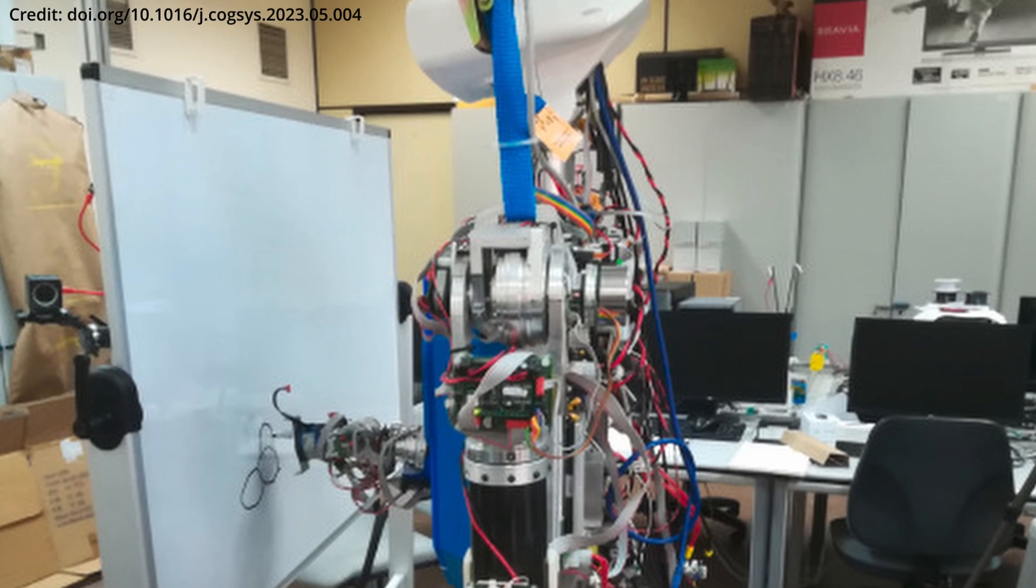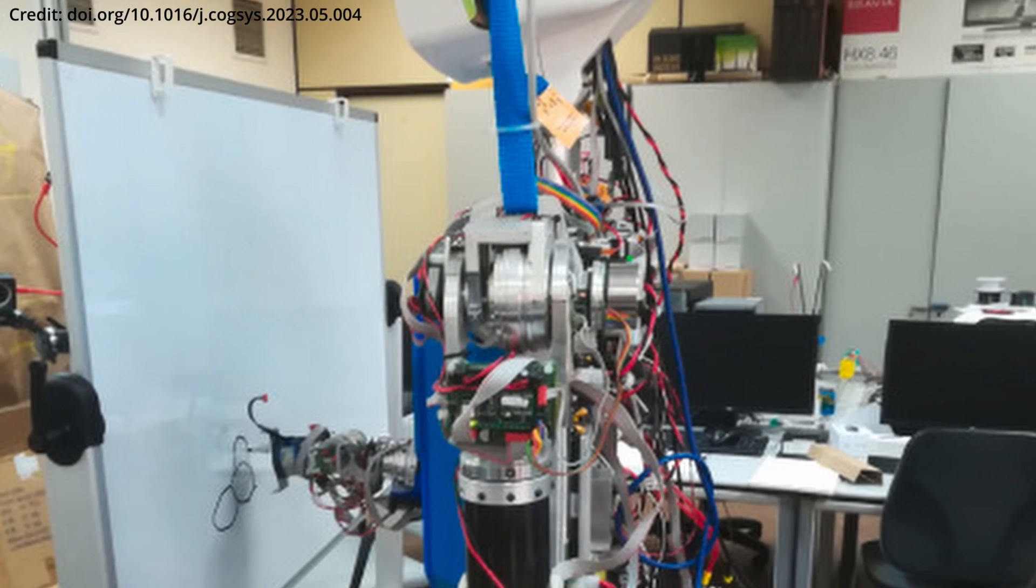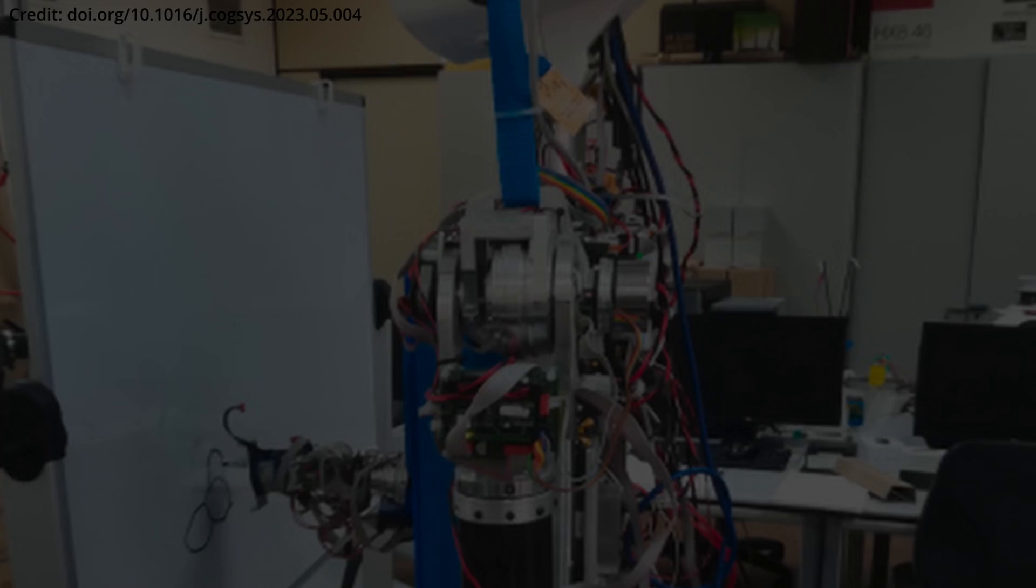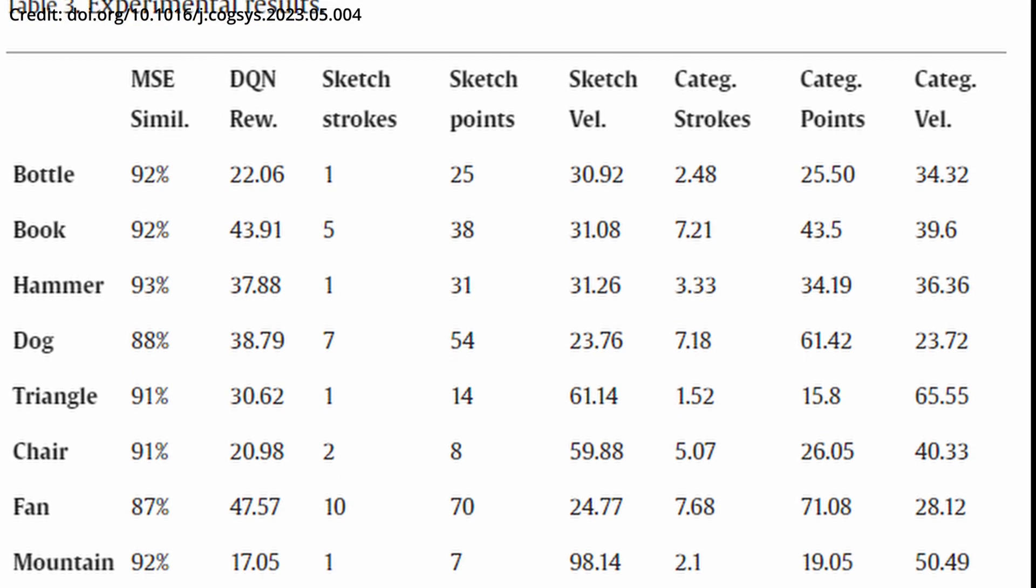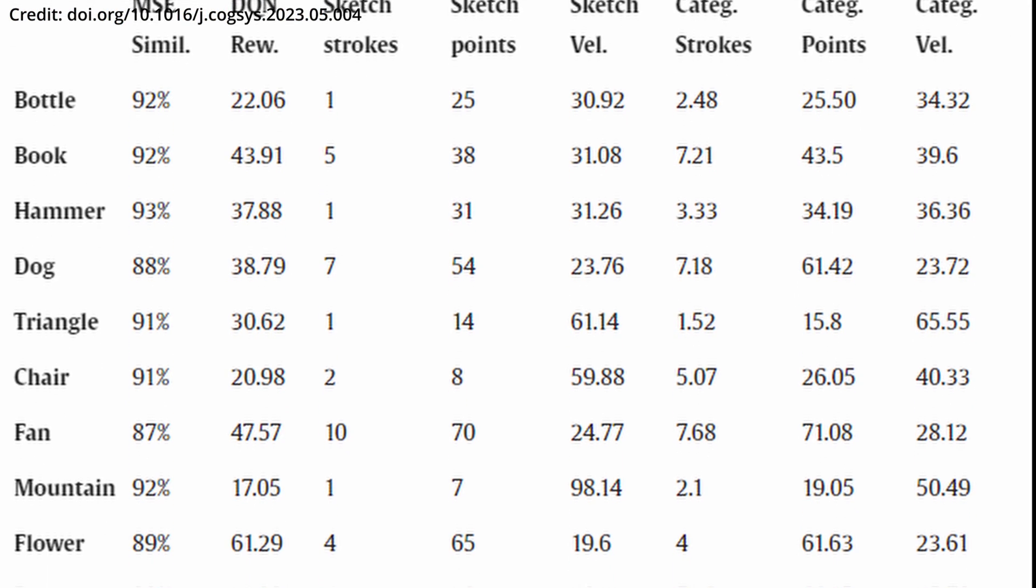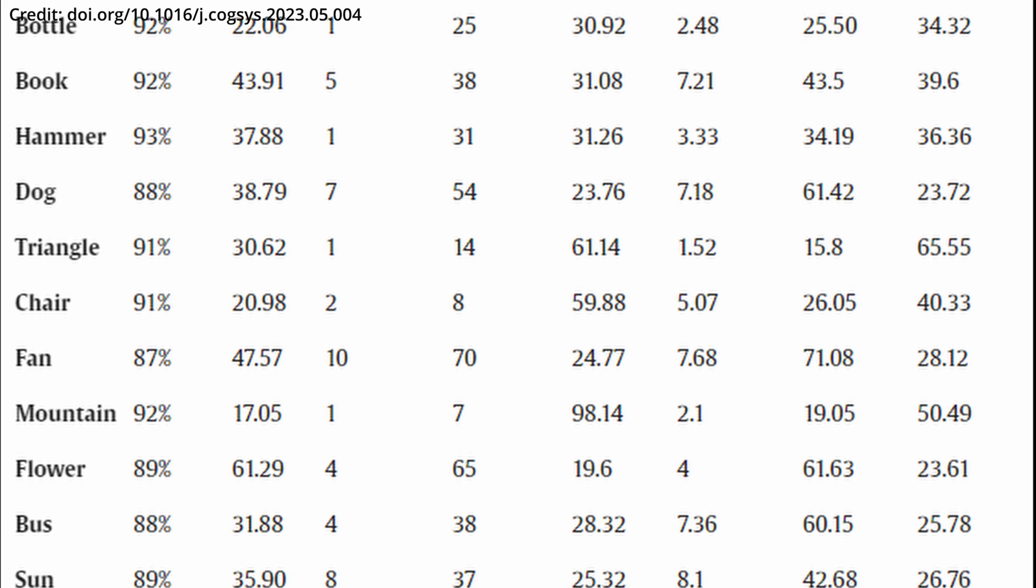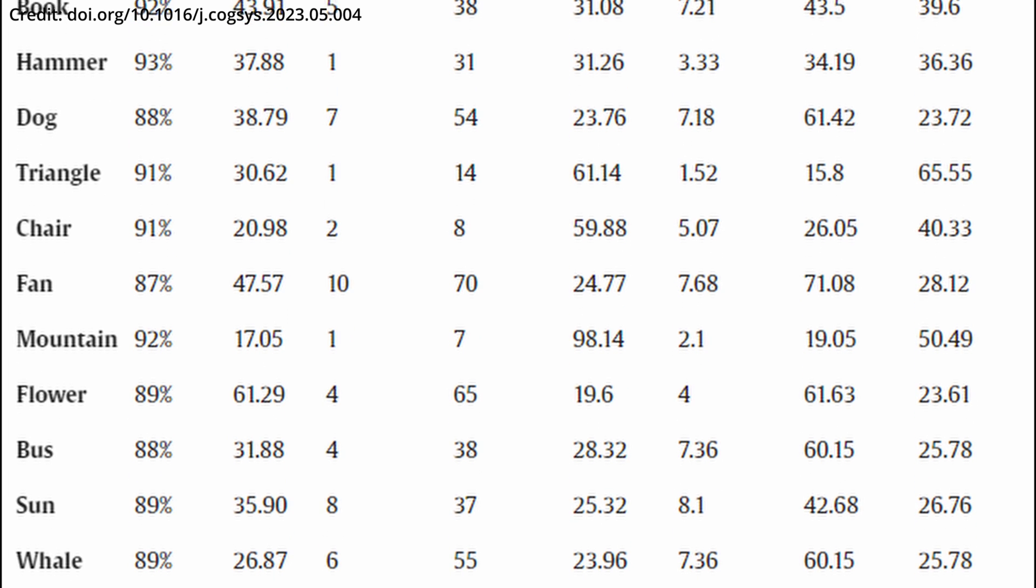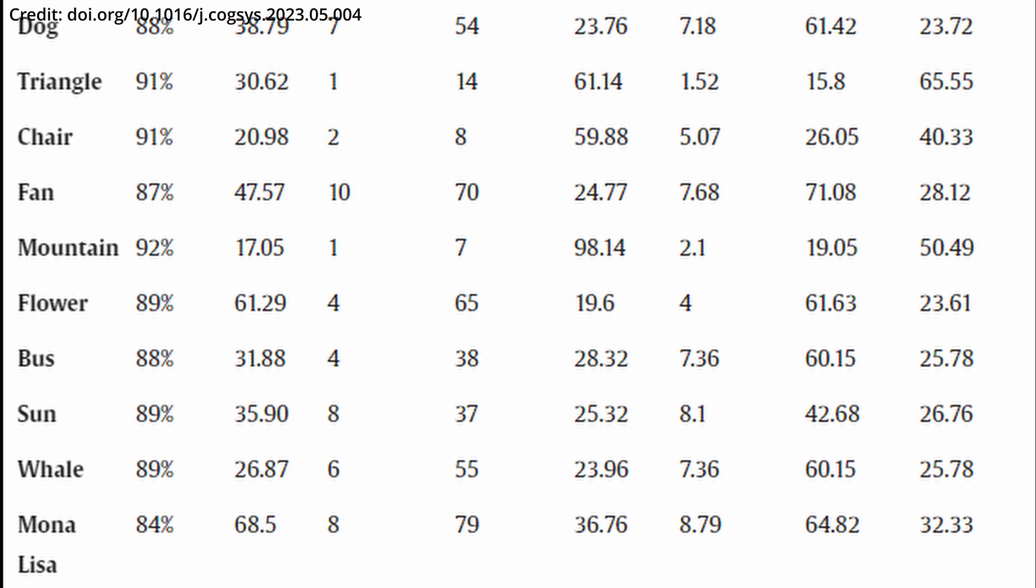The researchers tackled the challenge of translating AI-generated images to a physical canvas by creating a virtual space within it, allowing the robot to accurately follow the model's instructions. This method enables the direct translation of digital sketches into real-world artwork.